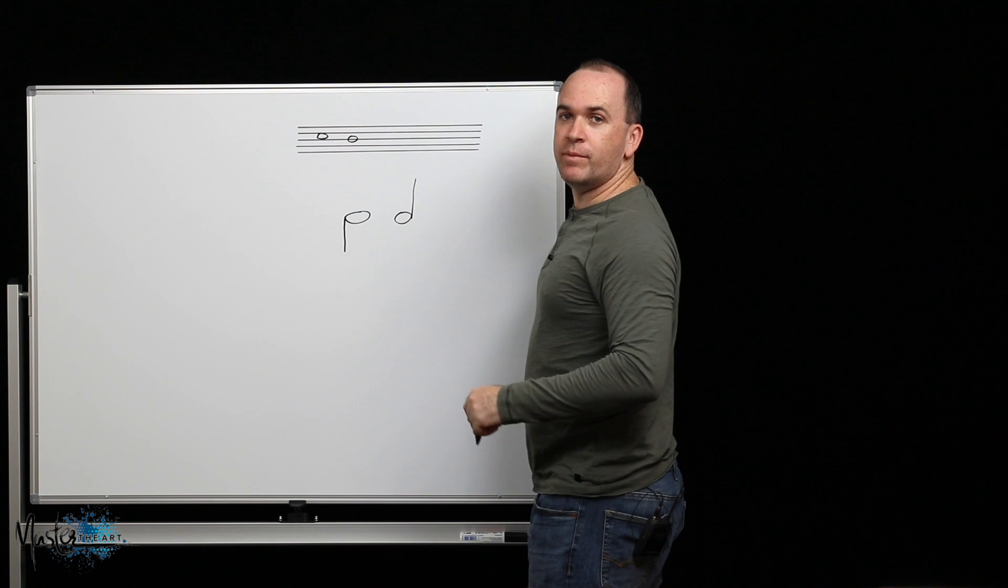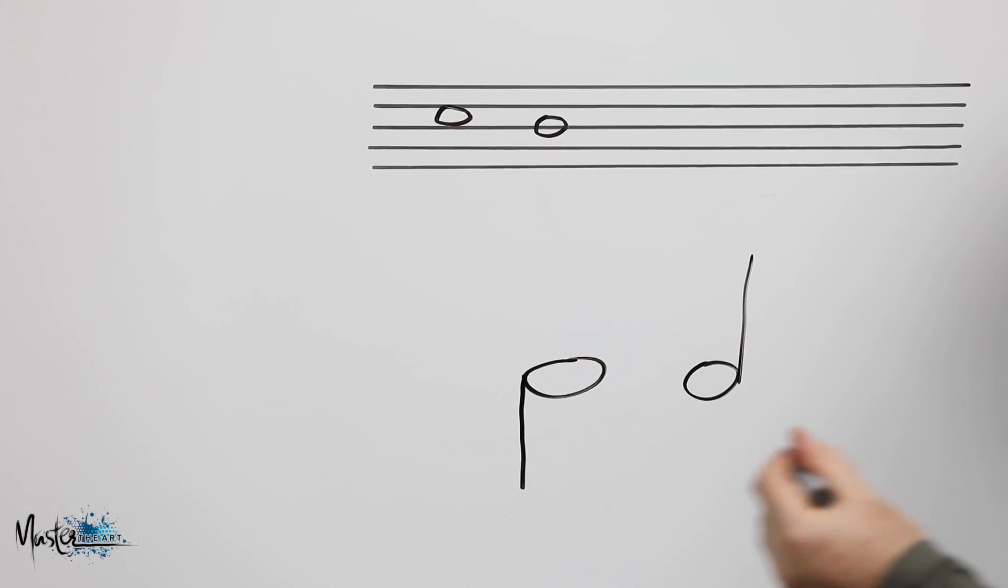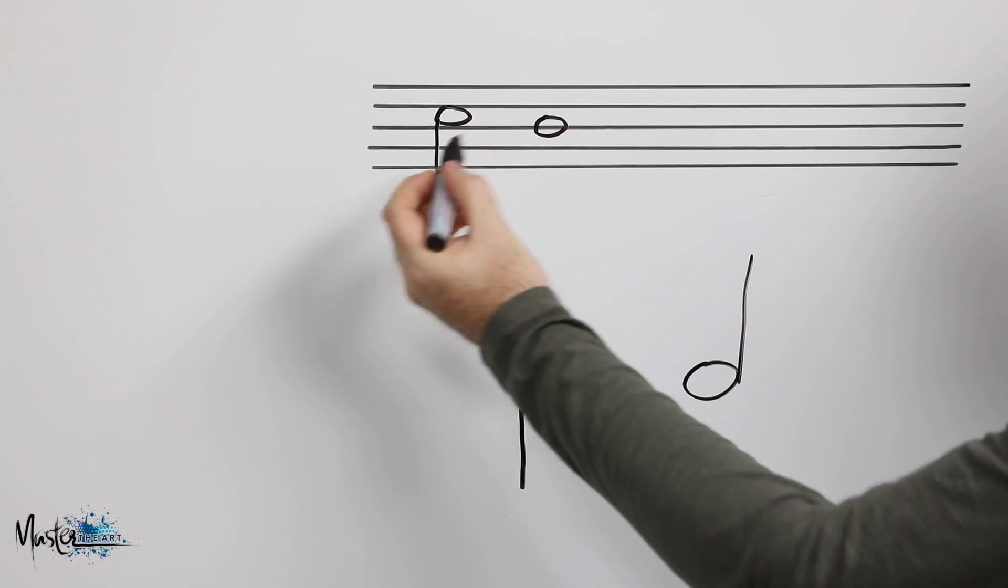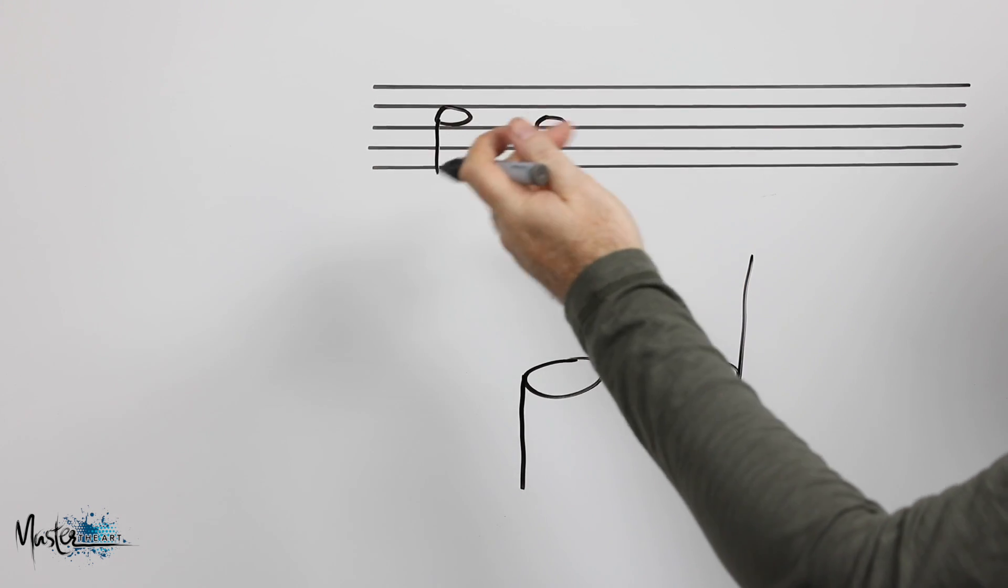When you're writing on the music, if the note head is above the middle line, the stem should always go down to the left. They say it should go down about the length of the staff. There's no hard and fast rule, but just a rough idea.